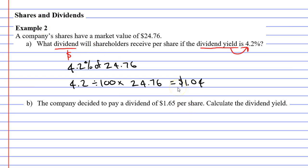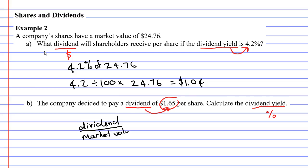As I said before, the dividend represents a dollar amount and the dividend yield represents a percentage. So how do we calculate a percentage? We take the dividend and put this over the market value, and whatever we get, we multiply it by 100.